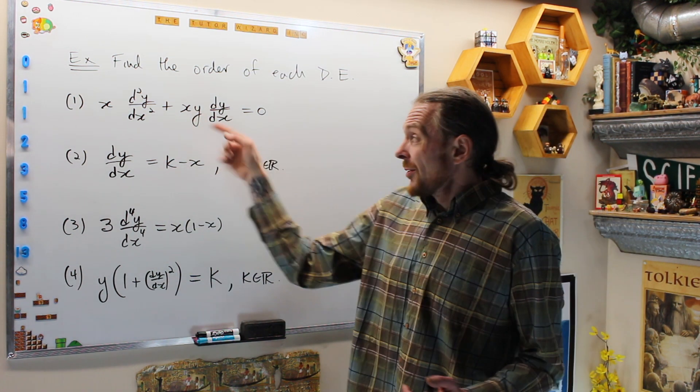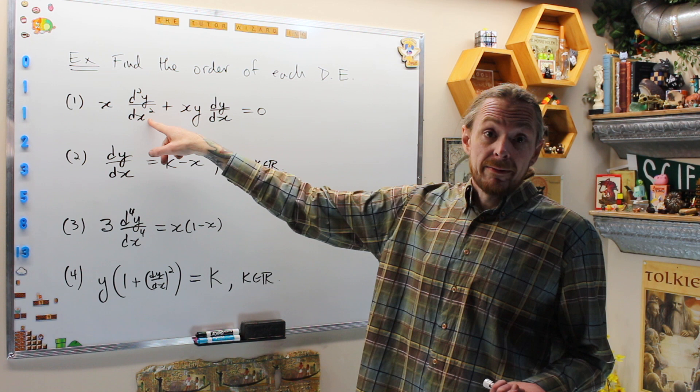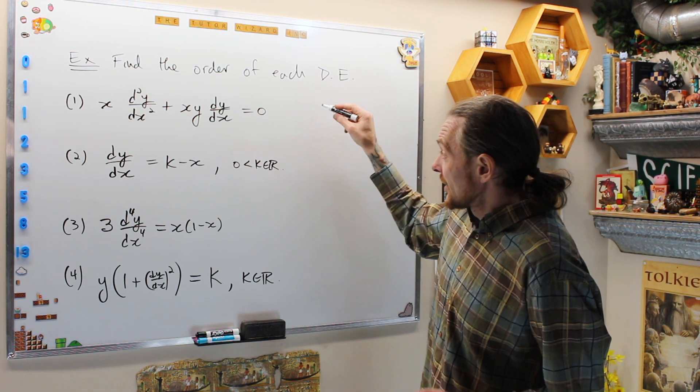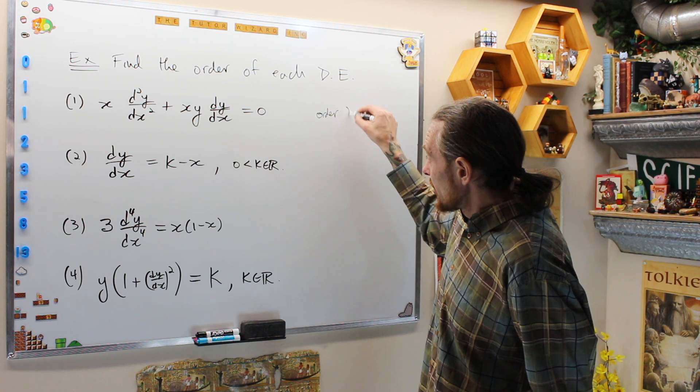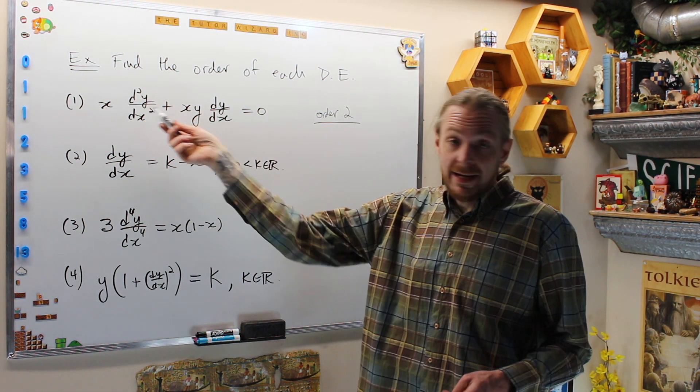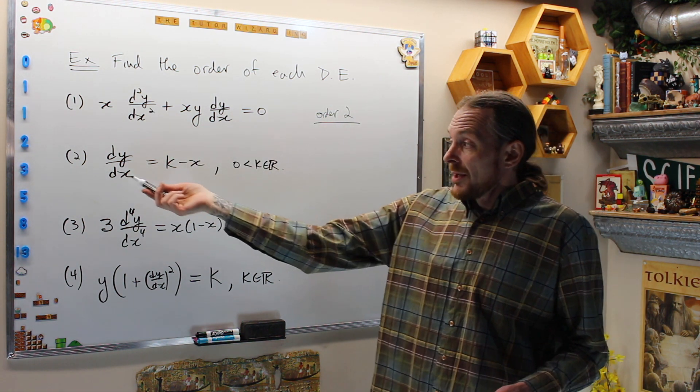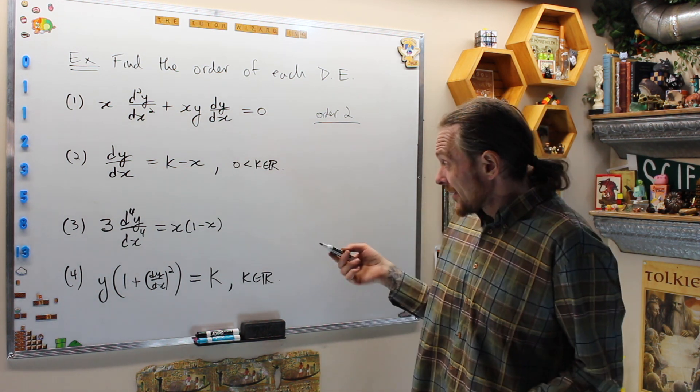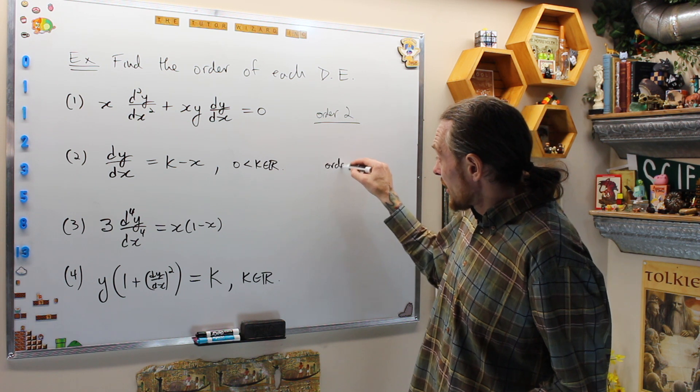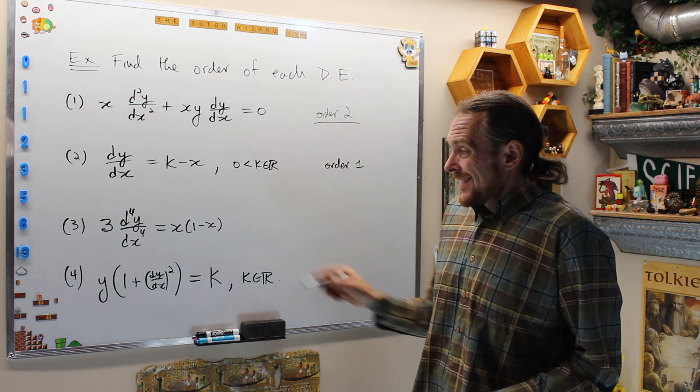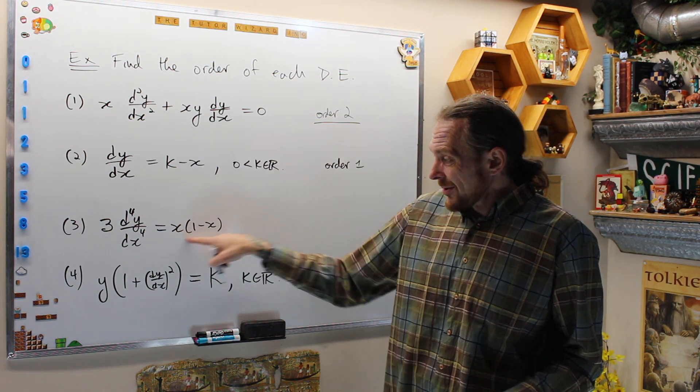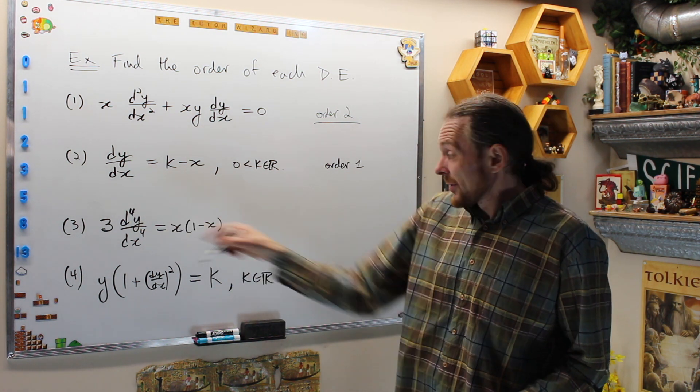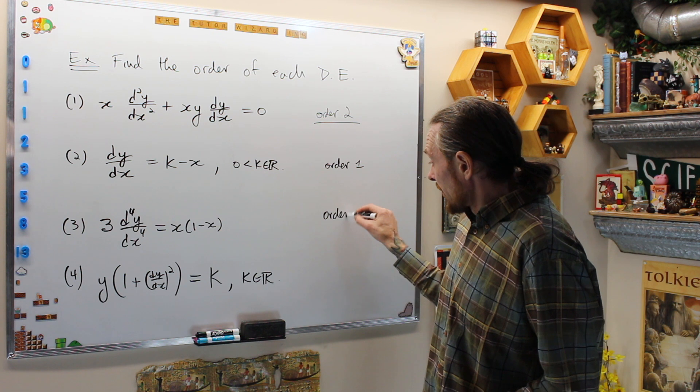In this equation, we have a first derivative and a second derivative. This is Airy's equation, I believe. This is order 2—highest derivative is the second derivative. In this one, we have the derivative and then just a constant and X, so the highest derivative is the first derivative. This is order 1. This has no derivatives, it just has a function of X. And this has a fourth derivative, so this is order 4.